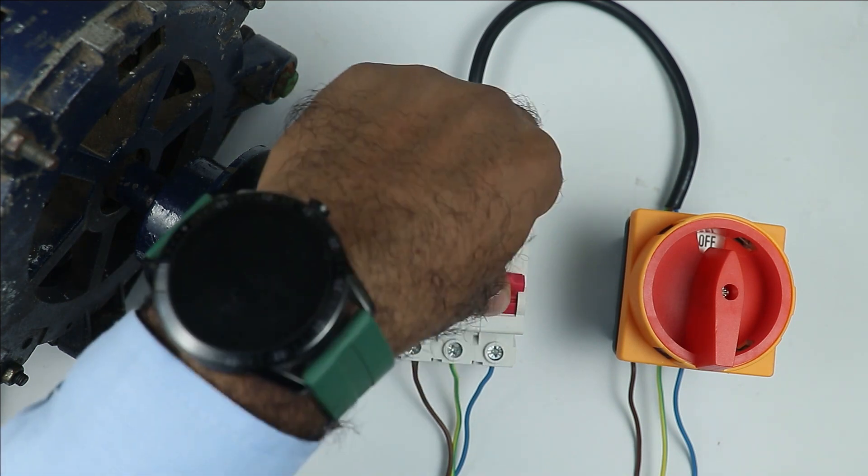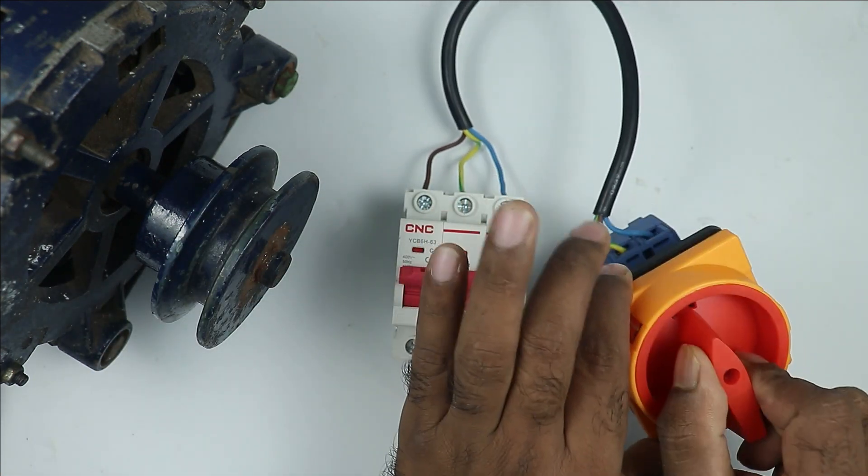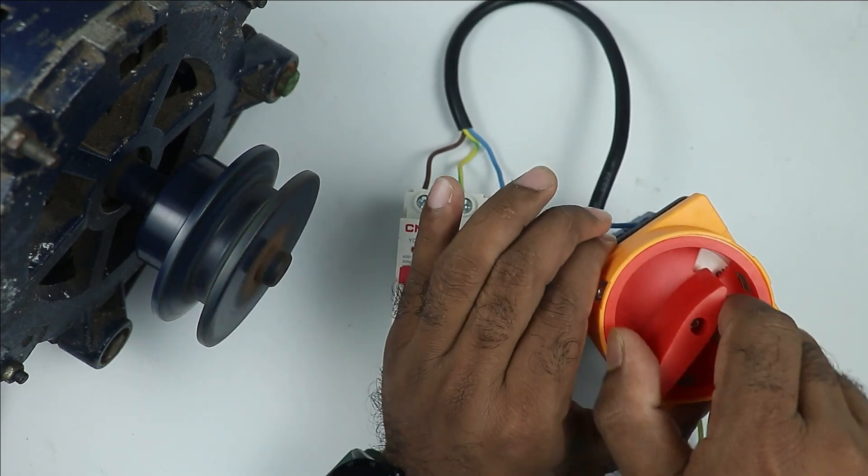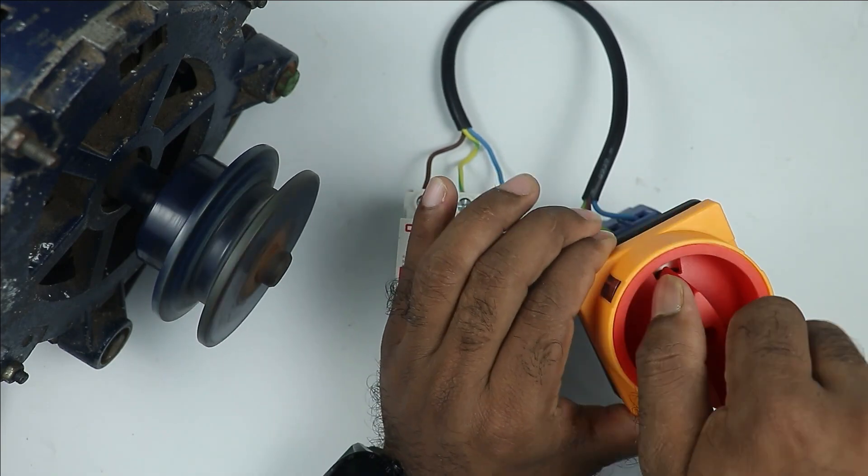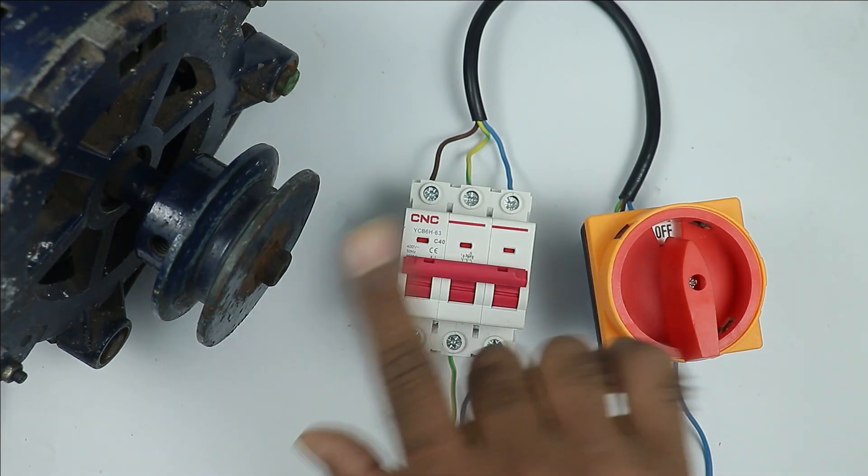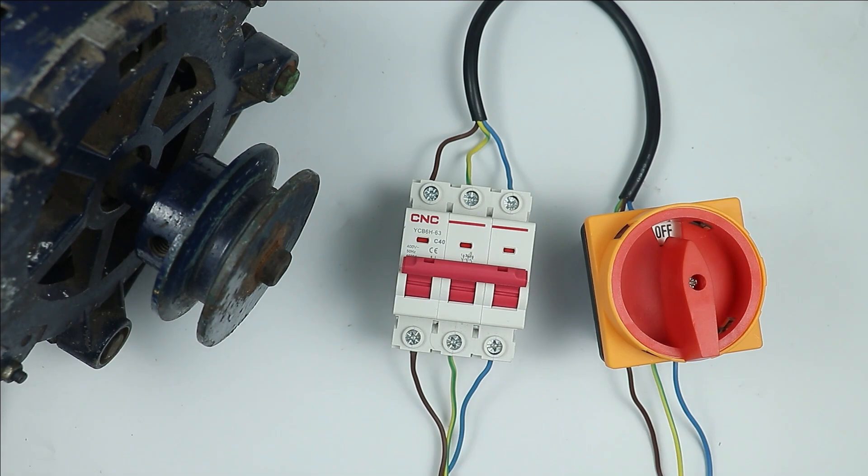Now if I turn on this MCB and after this, if I turn this switch, you can see motor is turned on. When switch is off, motor turns off. When switch is on, motor turns on. Let it be off for now. So this rotary switch has simple connections and simple working.